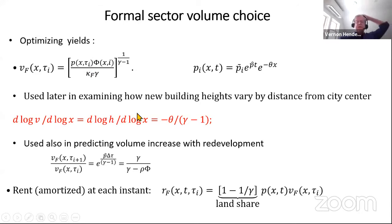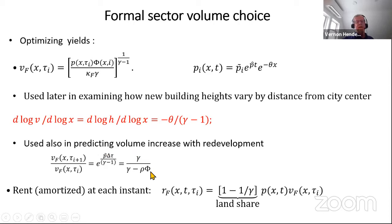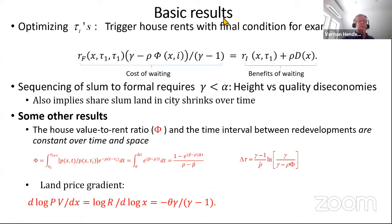Throughout the city, we'll have different buildings built at different times, giving us a new building height gradient that lets us estimate a key parameter. And we have to amortize in terms of rents for fixed costs. This is the formal sector's share in revenue. We can also solve to talk about how volume increases with redevelopment — as a function of the parameters and the value-to-rent ratio — and this will be a number like three: when you redevelop, you triple your height.